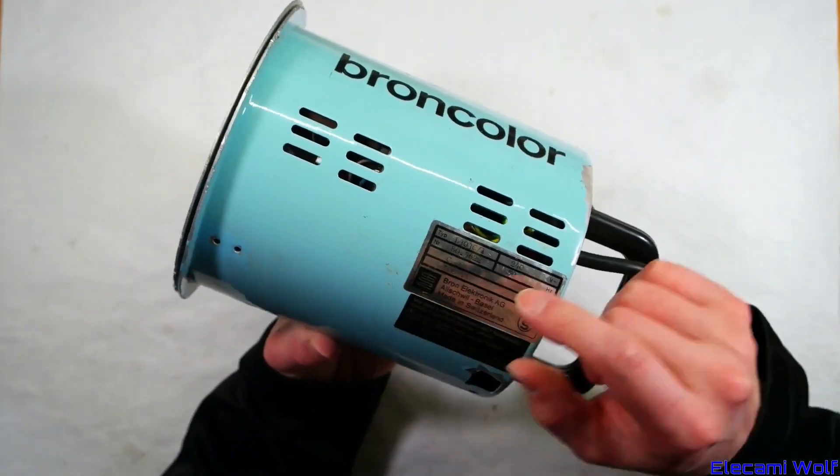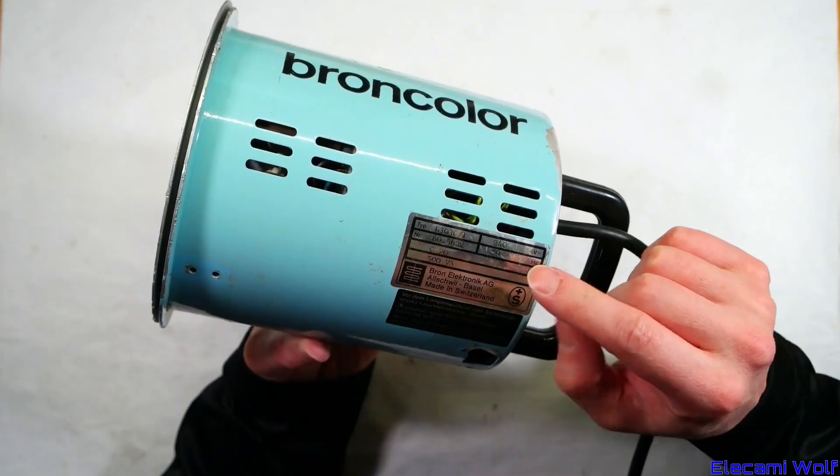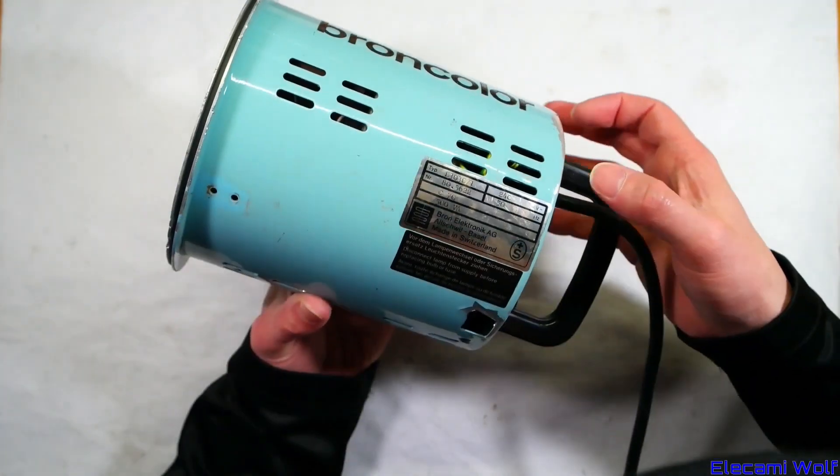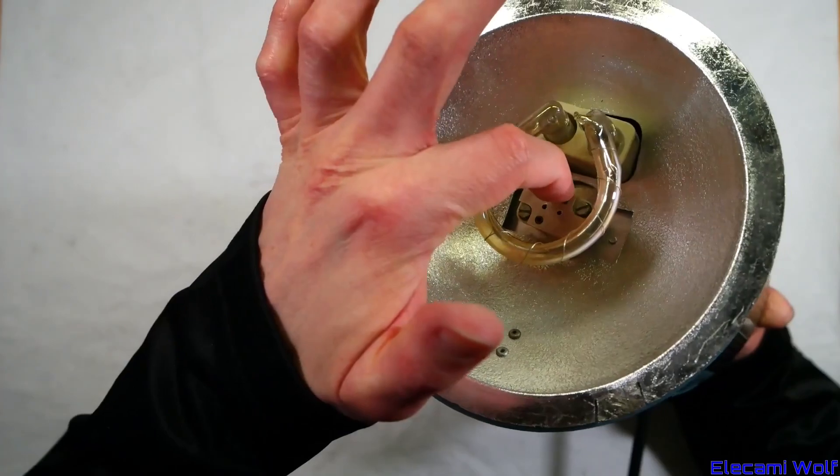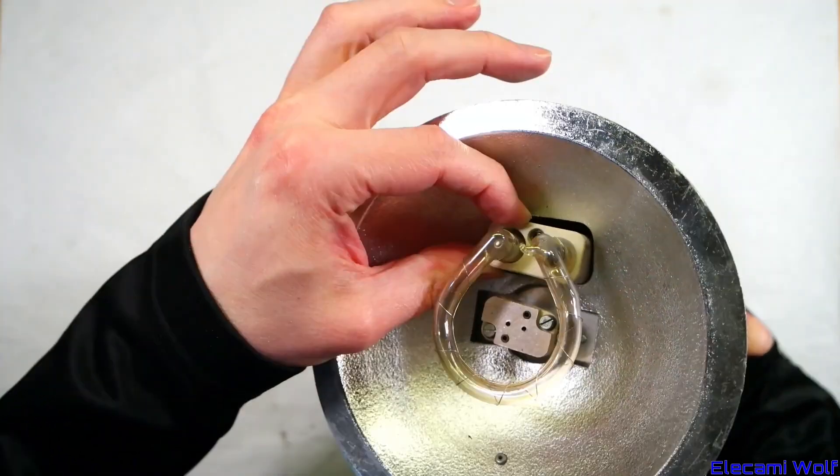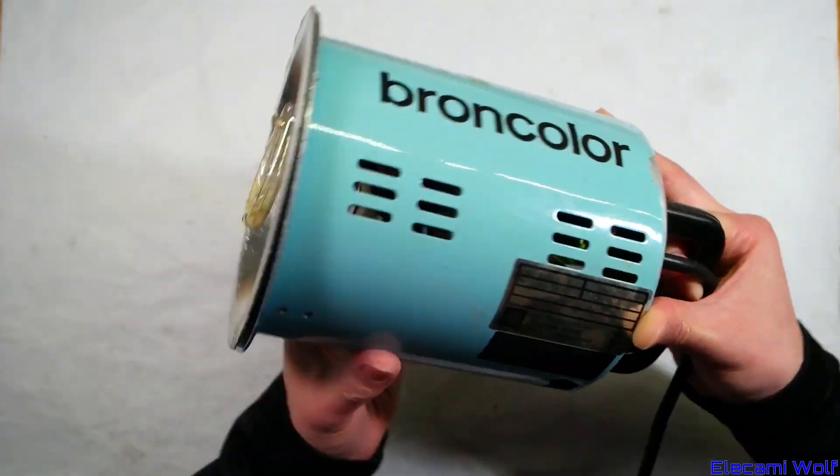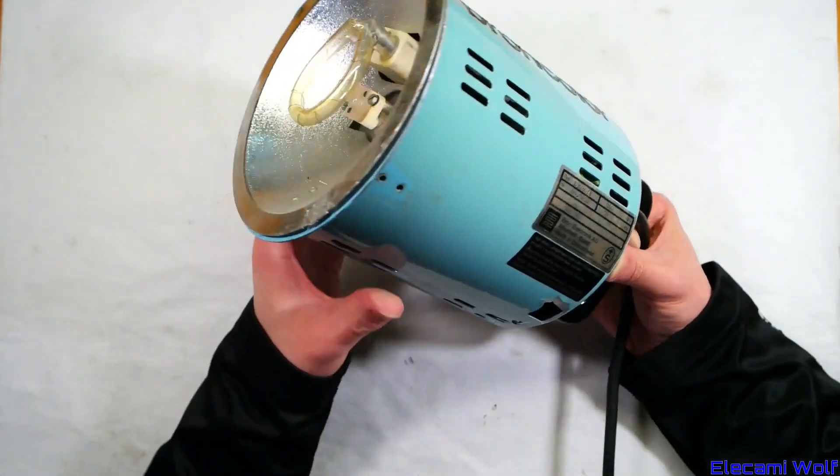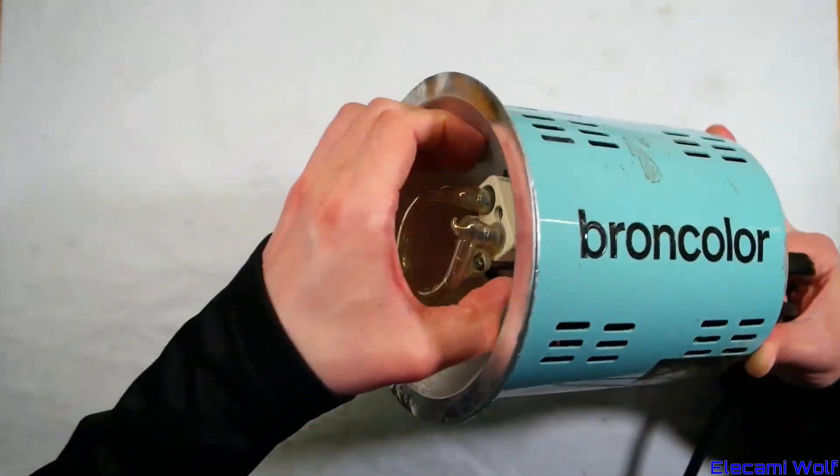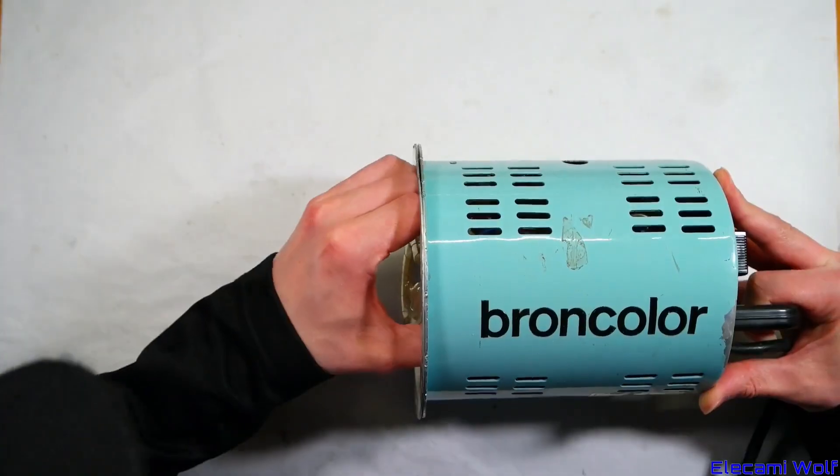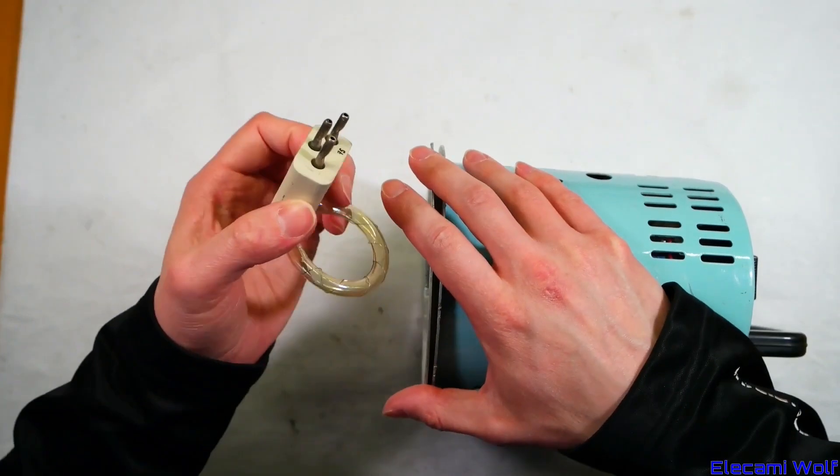So the model is a C70, 240 volts, 50 Hertz, 500 VA, made in Switzerland. It's missing the modeling lamp, like the halogen bulb which would normally go there to provide a bit of light to the subject so you can get it aligned properly and see where the light's going to fall. But it does have the flash tube which is the important thing.